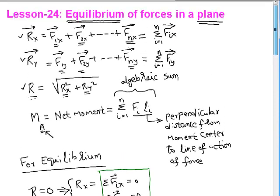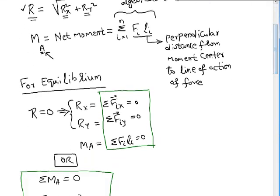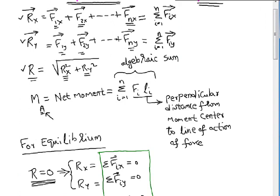Once we know the resultant force and the net moment, we can specify a condition for equilibrium. For equilibrium to exist, the magnitude of the resultant force acting on the object should be zero. Because if the resultant magnitude is not zero, a net force acts on the body, causing net acceleration, and thus the body is not in equilibrium. So if the body has to be in equilibrium, the resultant force should be zero, which means both Rx and Ry must each be zero.